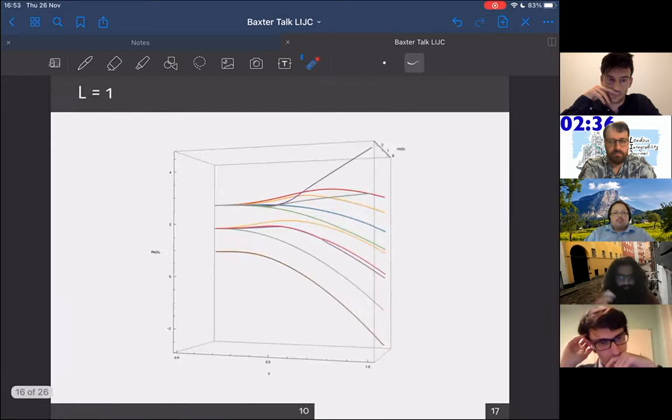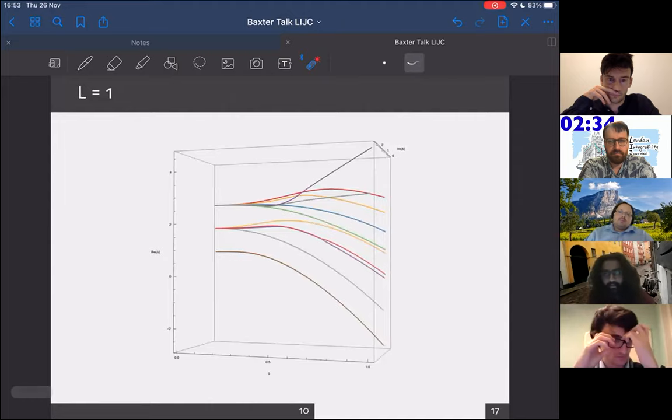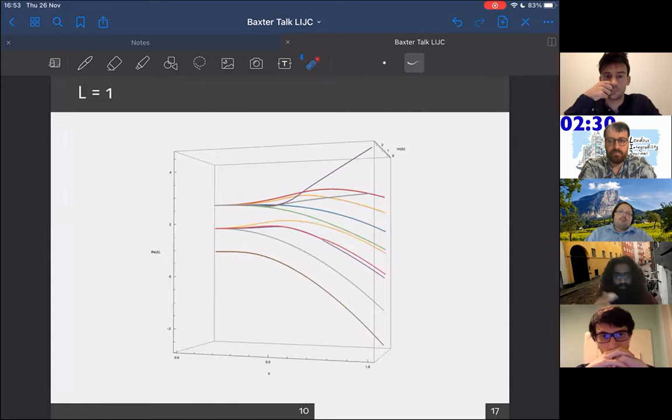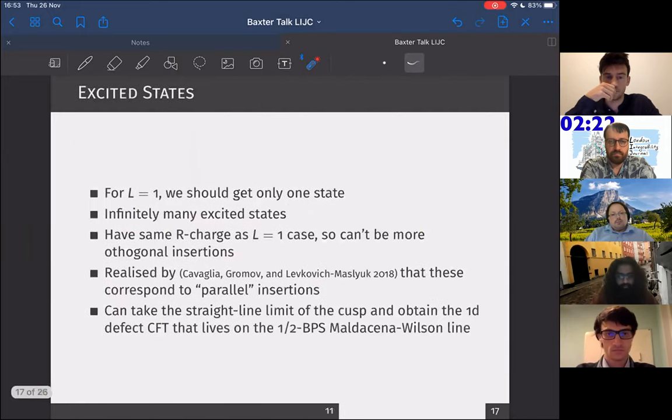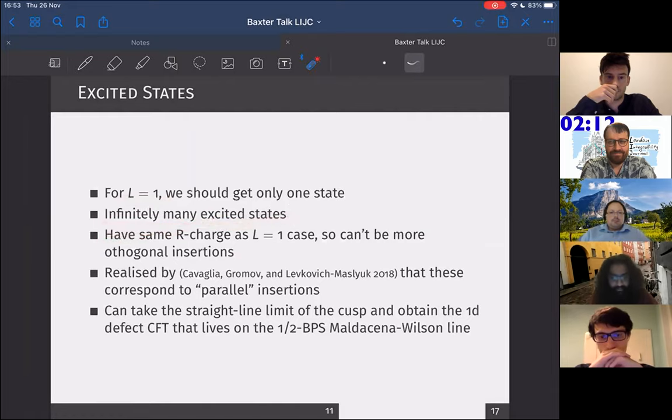Let me show you results. It's non-trivial to solve this Baxter equation, even numerically. Nevertheless, I won't explain exactly how we do it here, but we get the following solutions for L is equal to one. Now, looking at these solutions, you might be a bit confused and say, hey Julius, you said L was equal to one, so you should get only one state, but why do I see infinitely many excited states?